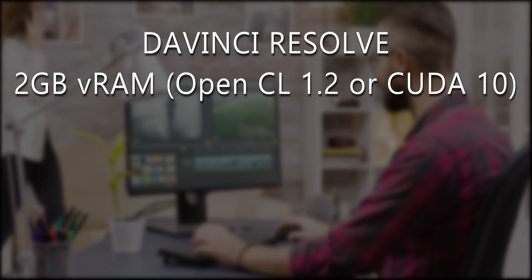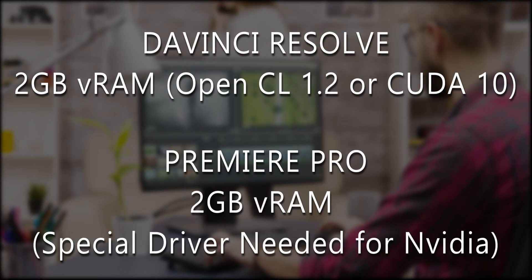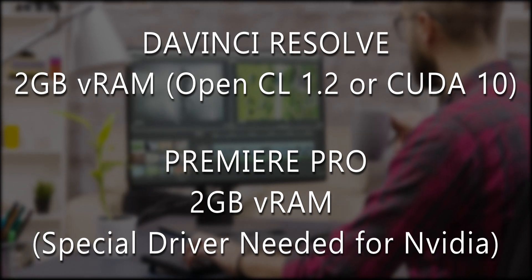Moving on to the GPU, both DaVinci Resolve and Premiere Pro will run on either a discrete or an integrated GPU. DaVinci Resolve requires a minimum of 2 gigabytes of VRAM and it needs to support OpenCL 1.2 or CUDA 10. Premiere Pro also requires a minimum of 2 gigabytes of VRAM. The big difference here is that the latest update of Premiere Pro uses a CUDA 9.2 SDK, which will require you to download a driver from the NVIDIA website if you have an NVIDIA GPU. Premiere Pro also recommends using a GPU with 4 gigabytes of VRAM.